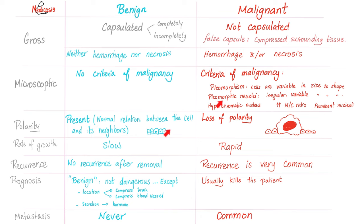Benign tumors care for their neighbors and the surrounding structure, but cancer doesn't care — there is loss of polarity. If I have a benign tumor and remove it, it's not gonna come back. But if I have cancer and remove it, it can come back. Benign tumors are usually not dangerous, but cancers are dangerous — they can kill you. Some patients will see their tumors disappear and regress on their own with no intervention. Cancer resolution and regression is one of the poorly understood phenomena. The reason may be that the cancer outgrew its blood supply or got destroyed by the immune system — but why does this happen in few people and not most?